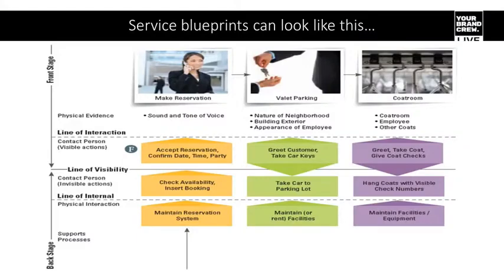By presenting it visibly it makes a difference. These are some ways that blueprints are presented. Some people have ones like this where they've got images at the top. You can see in the middle the line of visibility, which distinguishes the backstage activities from the front stage activities. This is just one way of putting it together — there's not a lot of words in there, but there's enough to prompt you to say okay, this is what they're doing at each step.